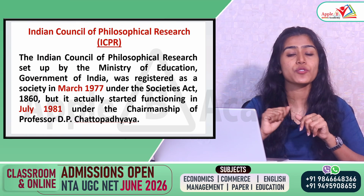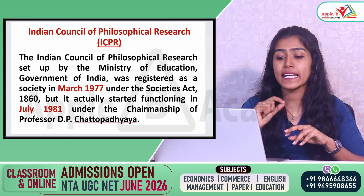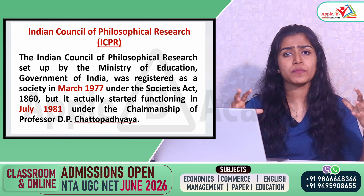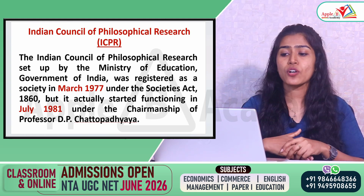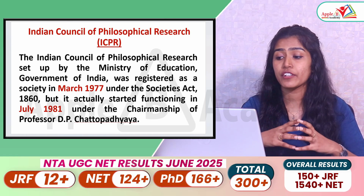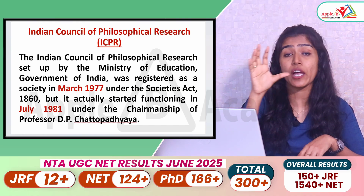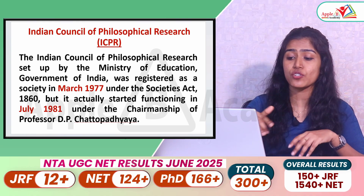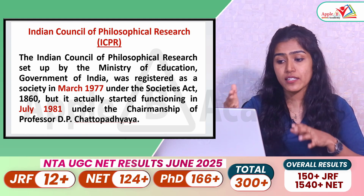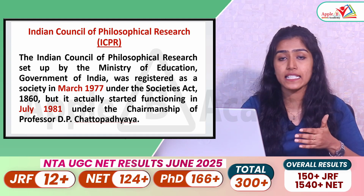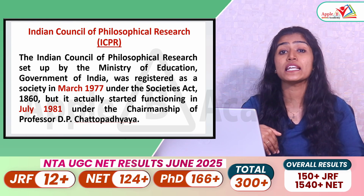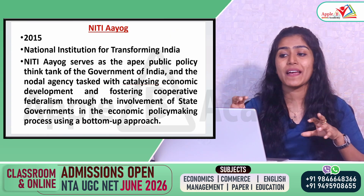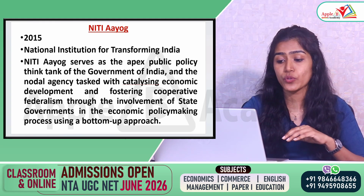Moving to the next institution — ICPR, which stands for Indian Council of Philosophical Research. Its major objective is to focus on the development of philosophical research happening in the country. This was set up by the Ministry of Education, Government of India, and was registered as a society in March 1977 under the Societies Act 1860, but it actually started functioning in July 1981. In the question they ask for the year of establishment, so remember 1977.